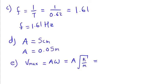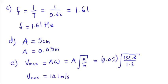Our amplitude is 0.05, and in that square root we have our k spring constant 132.8 divided by the mass 1.3. Hence our maximum velocity or maximum speed is 10.1 meters per second. So there we have it. This is how we answer this question. Thank you very much.